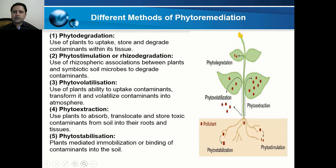The third method is phytovolatilization: plants uptake contaminants, transform them, and volatilize them into the atmosphere from their surfaces. In phytoextraction, different plants are used to absorb, translocate, and store toxic contaminants from soil into their roots and tissues. The key difference is that in phytodegradation the plant degrades the contaminants, whereas in phytoextraction the plant absorbs and stores them.